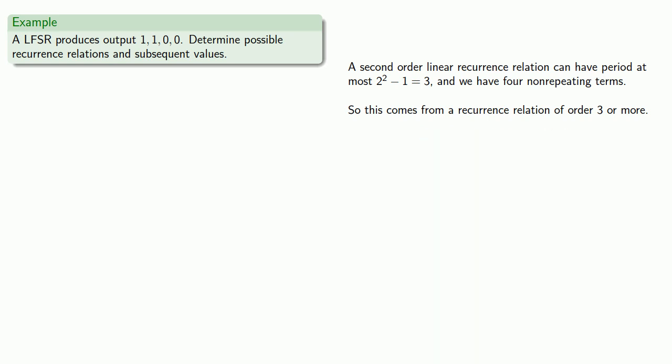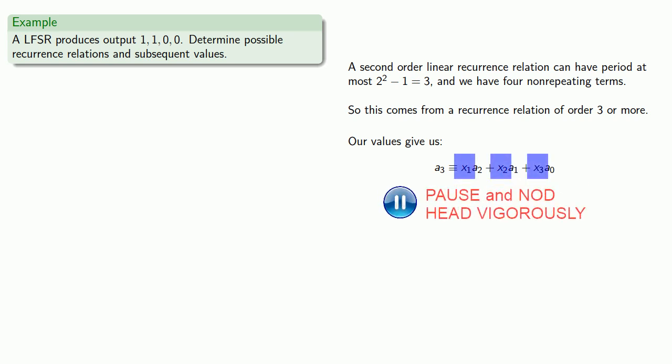If it's order 3, then we know every term is going to be some linear combination of the three preceding terms where we don't know the coefficients x1, x2, or x3. But we do know the first four values. We know a3 is 0, a2 is 0, a1 is 1, and a0 is 1. So we can substitute those in and get a congruence, and this congruence reduces to 0 congruent to x2 + x3.